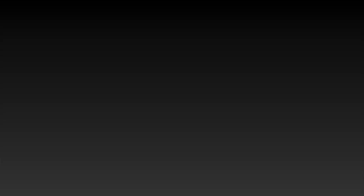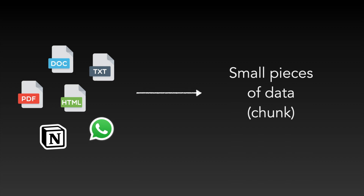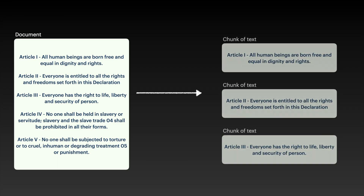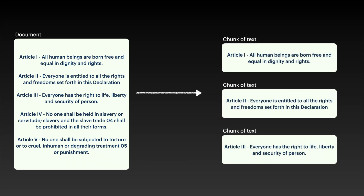Let's come back to our original problem. I have multiple PDF documents, some text, and some WhatsApp conversations. The first step is to split all of these texts into small pieces of data called chunks. I will divide all of the texts into small meaningful chunks of data — around 200 characters maximum — and cut when there is a new line to avoid mixing contexts. Here you can see how I divide the Universal Declaration of Human Rights as an example.